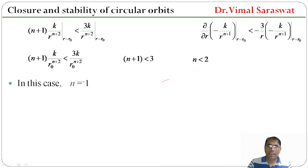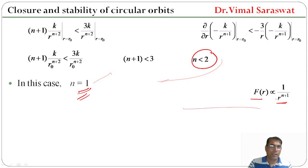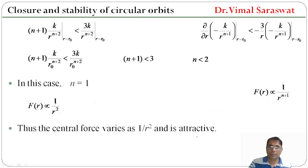Since n is an integer and n < 2, we have n = 1. With n = 1, F(r) is inversely proportional to r^(n+2) = r². Thus the central force varies as 1/r² and it is attractive.